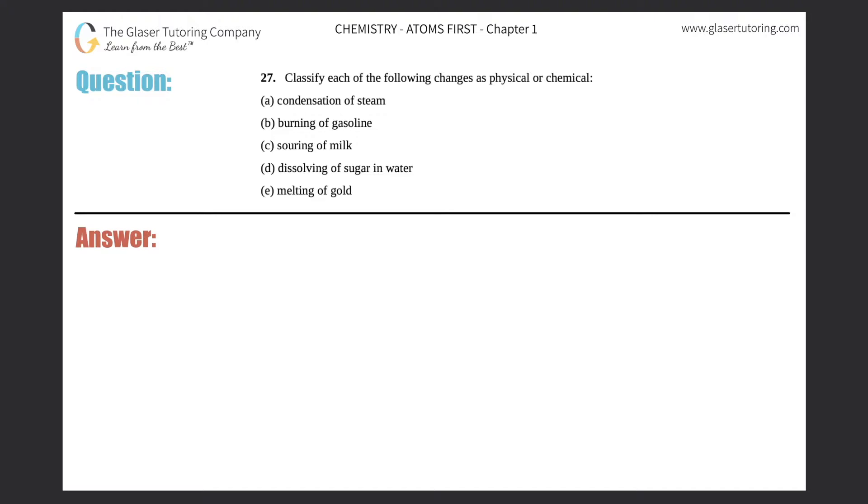Number 27, classify each of the following changes as physical or chemical, and then I have a through e. So I'm just going to say a, b, c, d, and e. Before we get into this question, we've got to figure out what a physical change is and what a chemical change is.